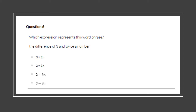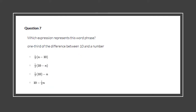Which expression represents this word phrase: 'the difference of 3 and twice a number'? 'Difference' means subtract, and 'twice a number' would be two times the number. So the difference of 3 and twice a number would be 3 − 2n.